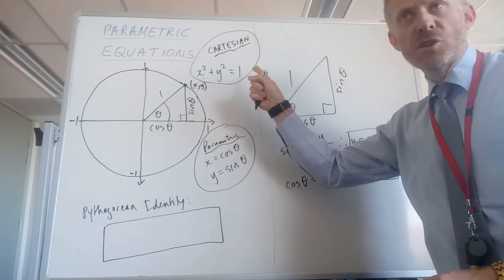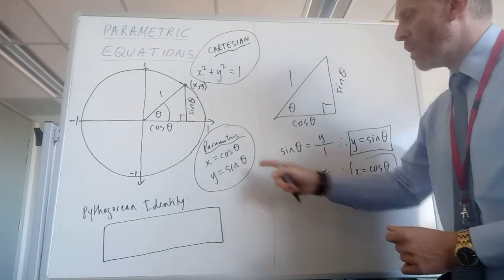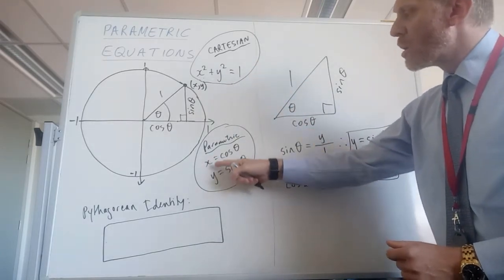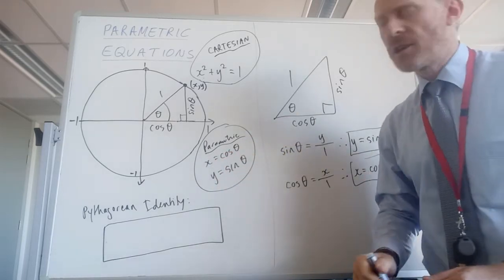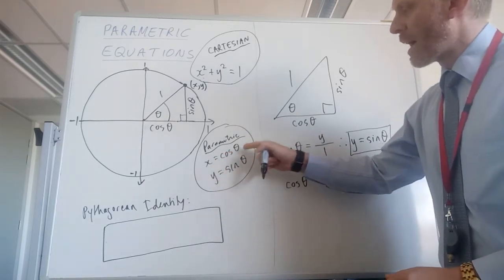So, instead of one Cartesian equation with two variables, we've now got two parametric equations with one, two, three variables, and they are x, y and theta.